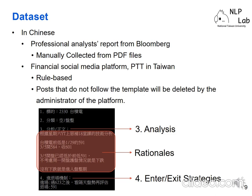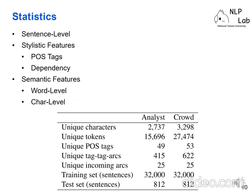Here is an example of the data used in the experiment. The social media posts follow a template, meaning crowds write their opinions based on this template, and posts that do not follow the template are deleted by the admin. So we can use a rule-based method to extract the rationale from the social media platform. Here are the statistics of the dataset we used, including sentence-level statistics, and we extract both stylistic features and semantic features.